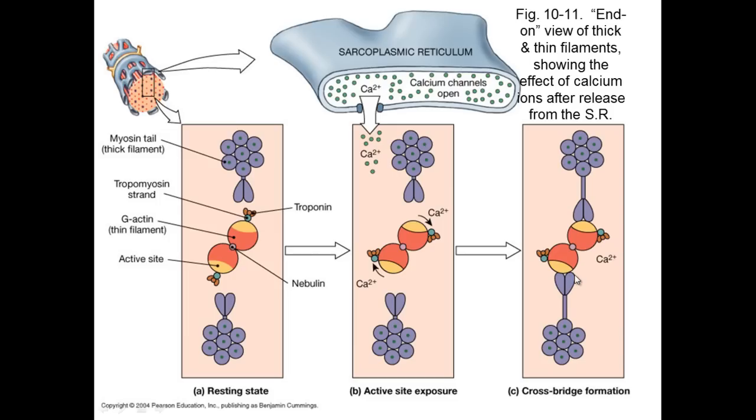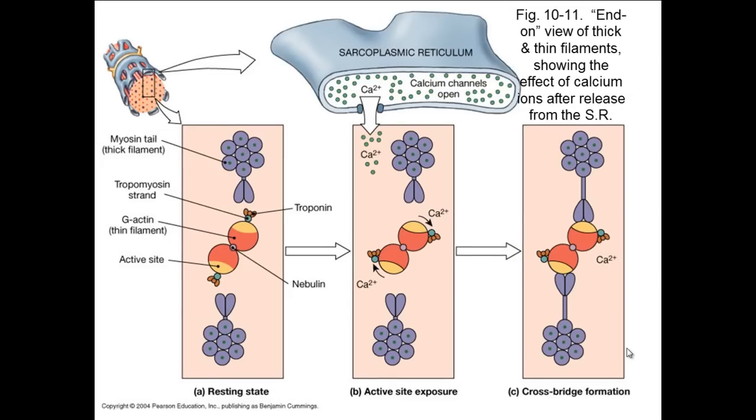This now means that the myosin head is now free to bind to the actin filament, so without the calcium ions present, this wouldn't happen. It is in fact this myosin head that actually pulls the actin inwards, and so obviously if the tropomyosin and the troponin are in the way, the myosin head can't bind, so it can't physically pull the actin filament inwards.